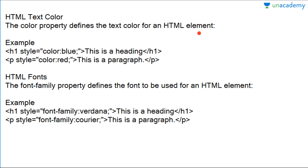If you want to change the text color of your heading, use the style attribute in the heading tag. If you want to change the paragraph text color, use it in the p tag. For example: h1 style equals to color blue — this is a heading; p style equals to color red — this is a paragraph. Running this will display the heading in blue and the paragraph in red.